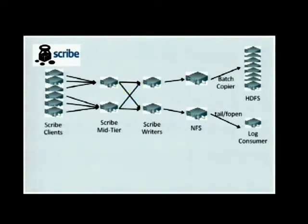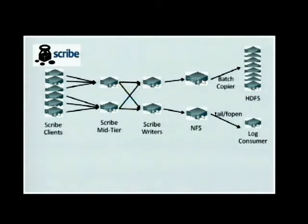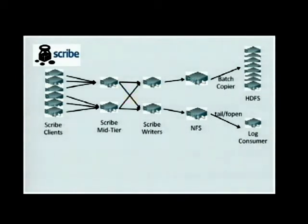To talk about Data Freeway, it's a good idea to go through the system we had about one year earlier, called Scribe. The basic idea is to have near-real-time data streams for our applications. We start from the left side: the first hop is from tens or hundreds of thousands of Scribe clients — the web servers — to hundreds of mid-tier machines. In this step, we reduce the number of TCP connections a lot by merging them together to a fewer number of machines.